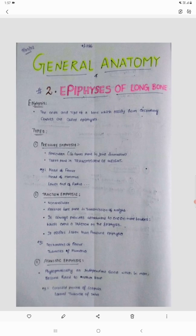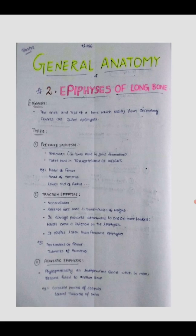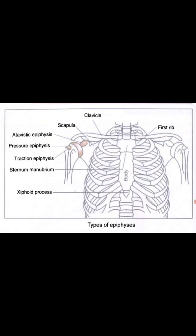The first one is the pressure epiphyses. The pressure epiphyses is actually articular, meaning it takes part in joint formation. The articular surface will take part in joint formation and also in the transmission of weight. Examples include the head of the femur, head of the humerus, and lower end of the radius. Here, the head of the humerus participates in the glenohumeral joint, otherwise called the shoulder joint — so it is articular, and this is an example of pressure epiphyses.